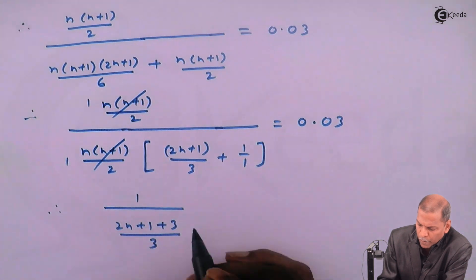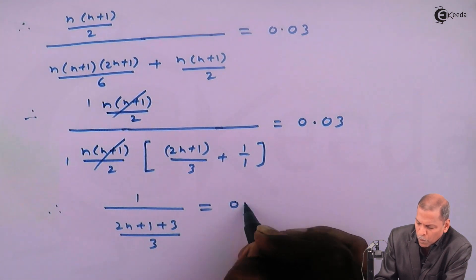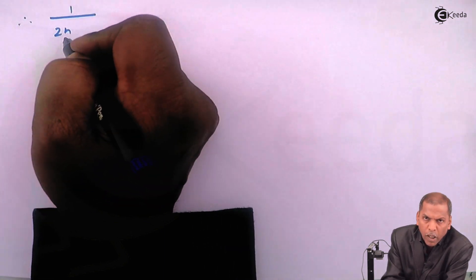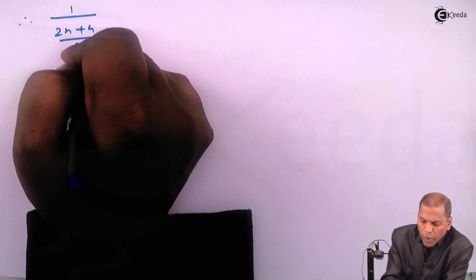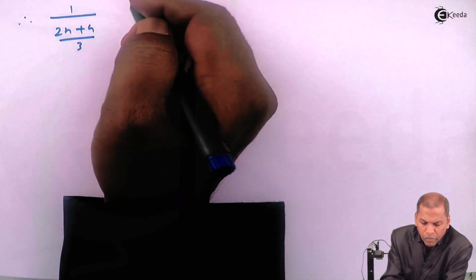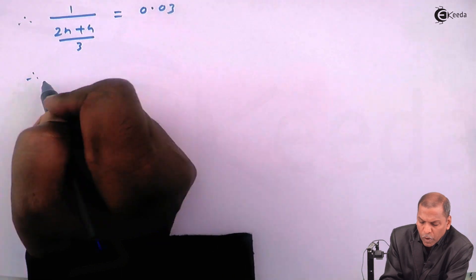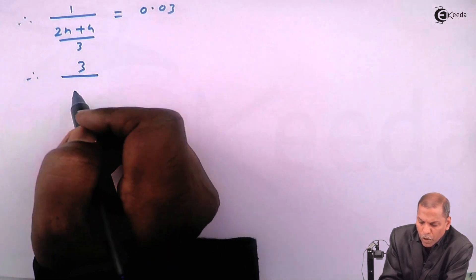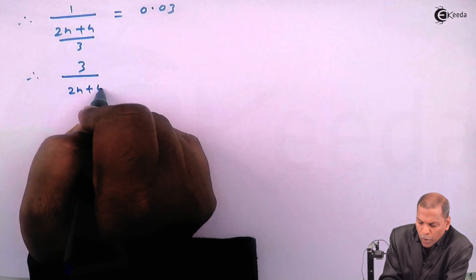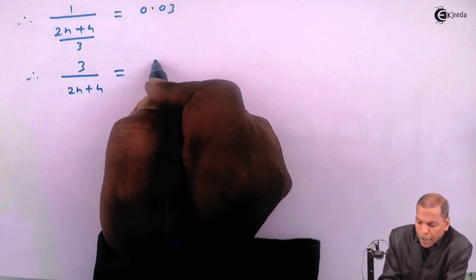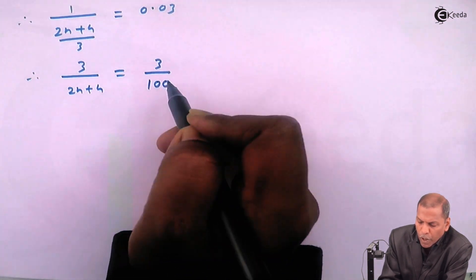Therefore the next step: 1 upon — since 2n+1+3 gives 2n+4, divided by 3 — equals 0.03. So 3 upon (2n+4) is equal to 0.03, and 0.03 can be written as 3/100.